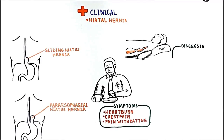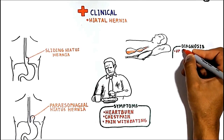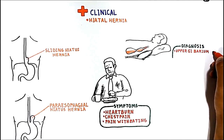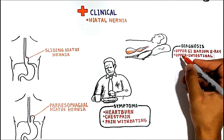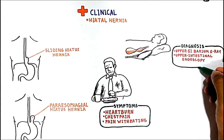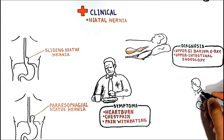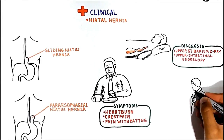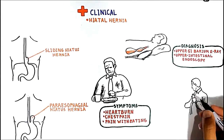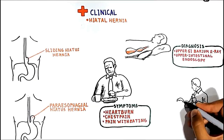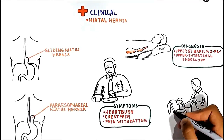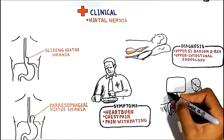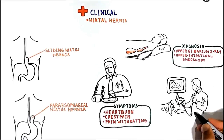Diagnosis of hiatus hernia can be made either through an upper gastrointestinal barium X-ray or upper intestinal endoscopy, in which the physician visually examines the esophagus and stomach using a flexible scope while the patient is lightly sedated.